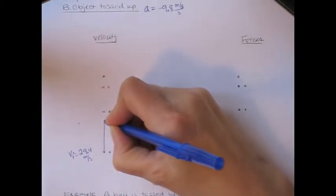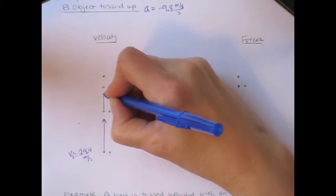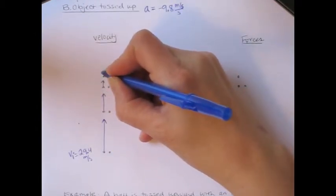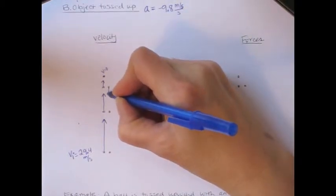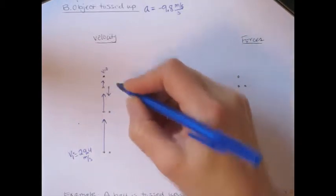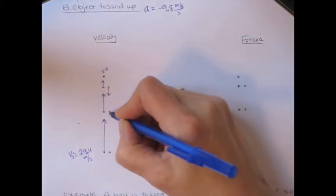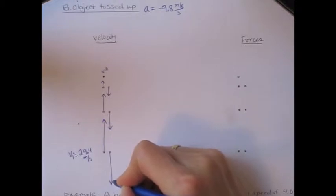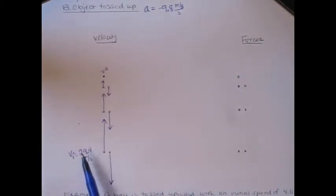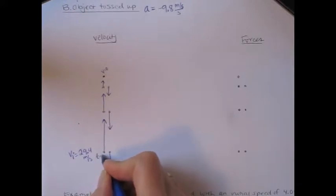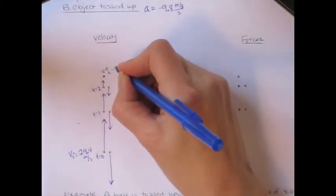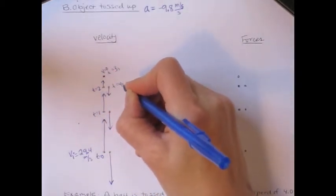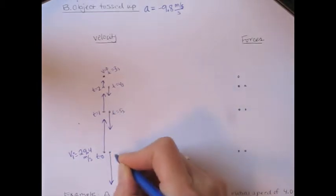I'm going to draw my motion map. We know it's slowing down on the way up, with velocity instantaneously zero at the highest point, and then speeding up on the way down. I've offset the dots for the way down just so that my arrows are not on top of the other arrows. Let's talk about what the velocity would be at each second — t equals zero, one, two, three, four, five, and six seconds.